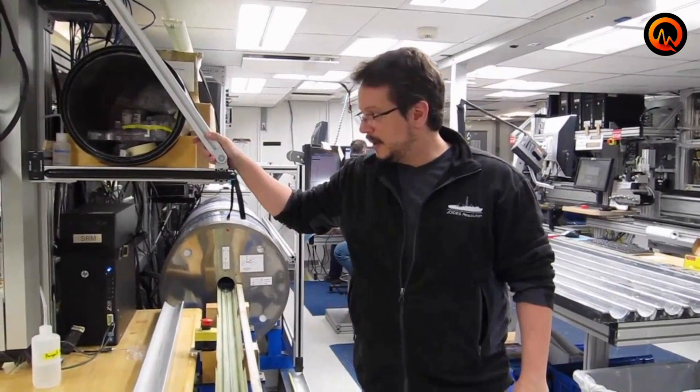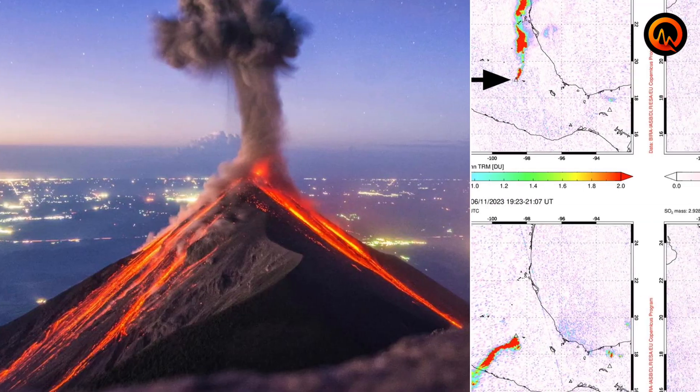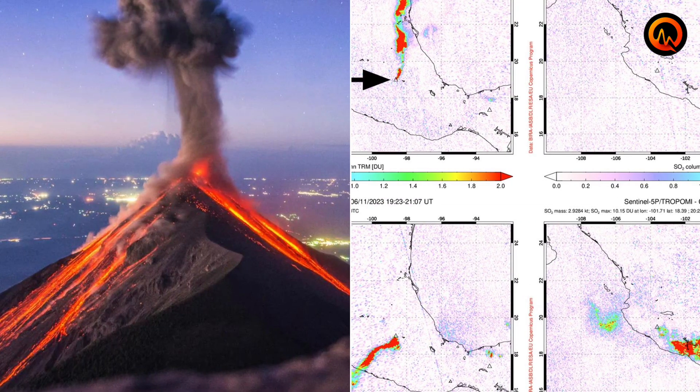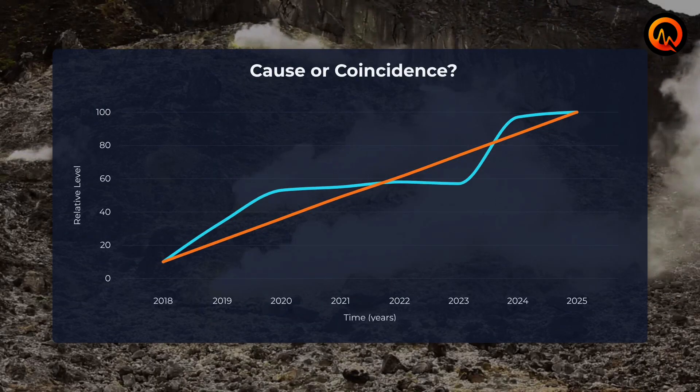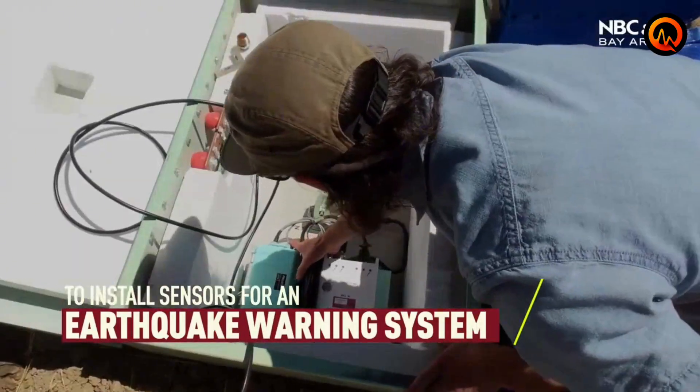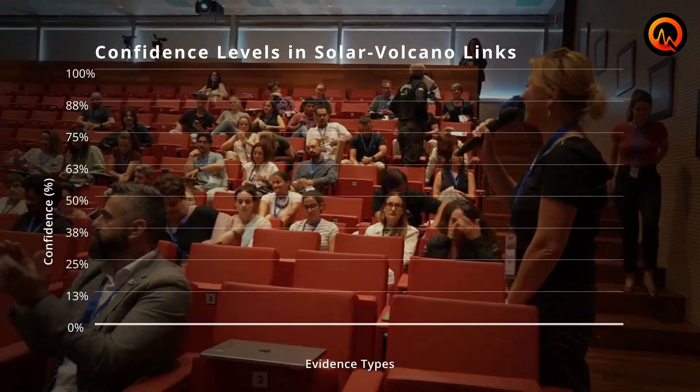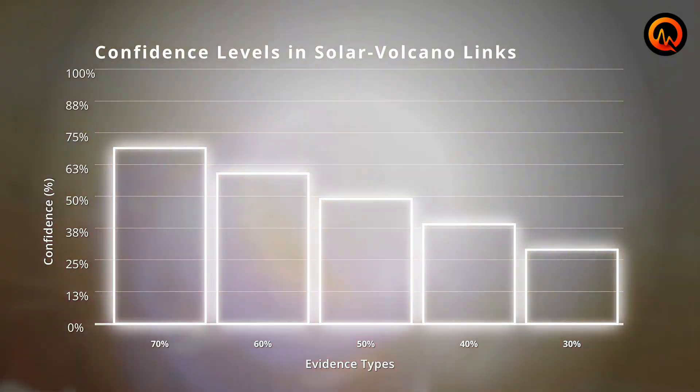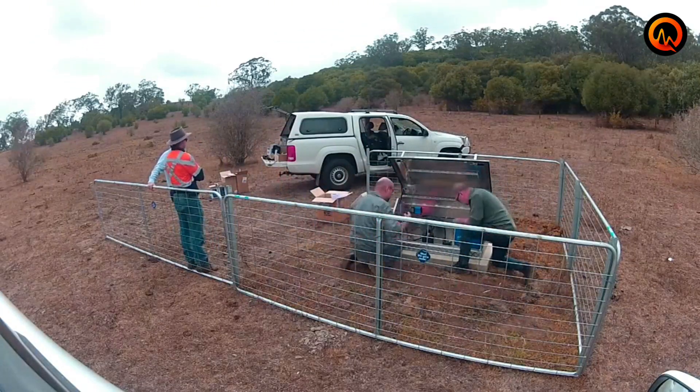What scientists do know is that electromagnetic fields measurably affect the physical properties of rocks and minerals. What remains theoretical is whether these effects are strong enough to trigger major volcanic eruptions, or whether they merely influence eruption timing when other geological conditions are already primed for activity. The evidence suggests electromagnetic influence on volcanic systems is real, but the magnitude of this influence and its role in triggering versus timing volcanic events continues to be studied and debated within the scientific community.